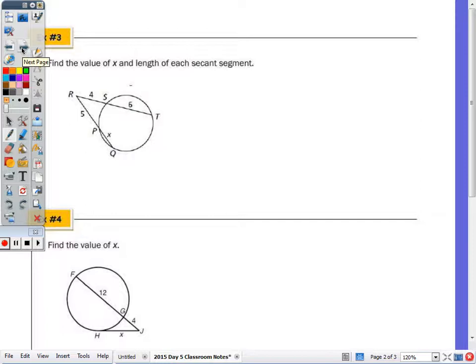In number three, find the value of x and the length of each secant segment. So I have two secant segments, and I use in words whole times external equals whole times external. So the whole for RT is 10, so that would be 10 times the external piece 4 equals,